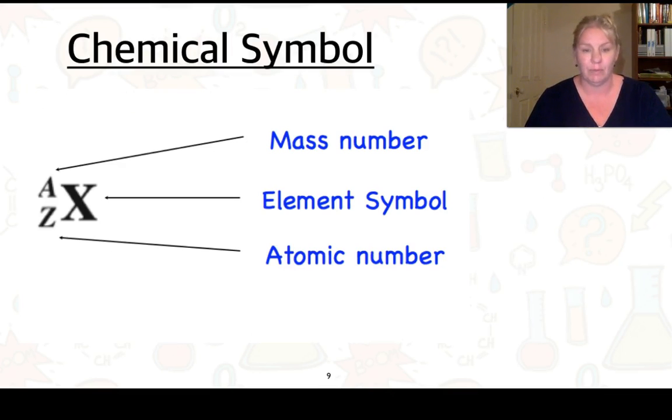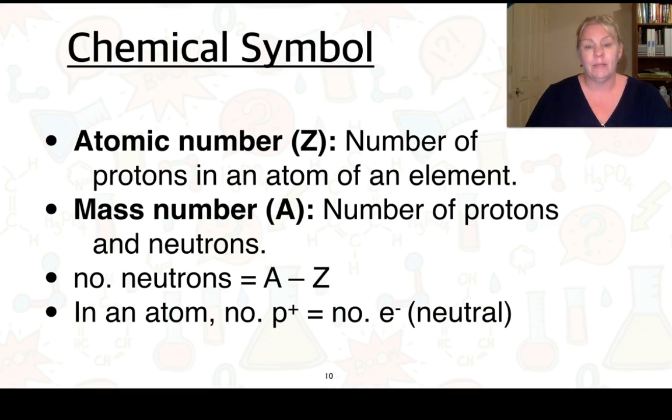Here's our chemical symbol. In this case we could draw our chemical symbol in this form. The symbol will come here, your mass number goes at the top as a superscript, and your atomic number goes in as a subscript. So the atomic number is the number of protons in the element, and the mass number is the number of protons and neutrons. If we take the two away, we can work out how many neutrons we have.